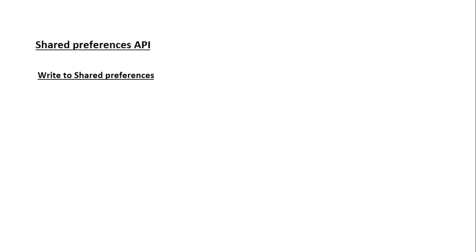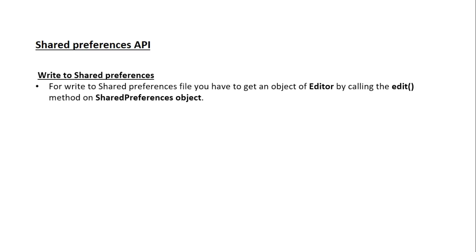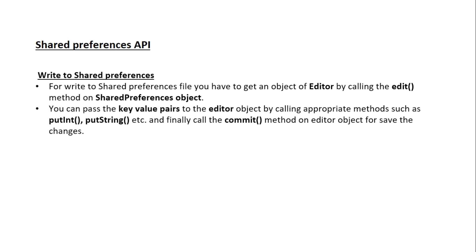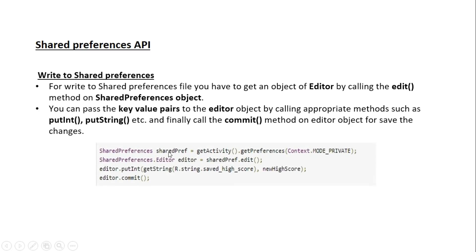Now we can learn about how to write to SharedPreferences. To write to a SharedPreferences file, you have to get an object of Editor by calling the edit() method on the SharedPreferences object. You can pass key-value pairs to the Editor object by calling appropriate methods such as putInt, putString, etc., and finally call the commit() method on the Editor object for saving the changes. First, create an object of SharedPreferences, then create an Editor object by calling the edit() method on the SharedPreferences object.